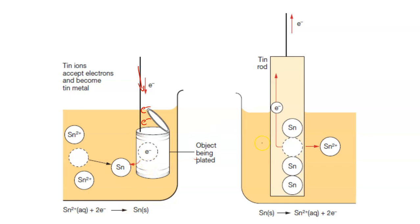At the anode, tin will be being oxidized, the electrons will be moving up out of the electrolyte moving along the wire this way and tin will be being oxidized from solid tin into aqueous tin ions at the anode. So as the tin ions are reduced at the cathode, they are replaced at the anode by the oxidation of the tin metal.